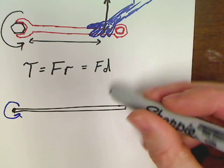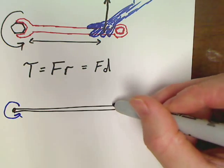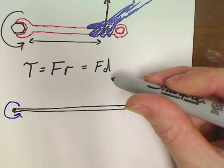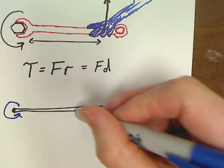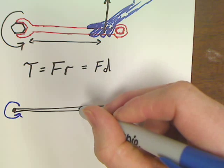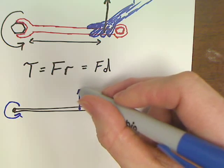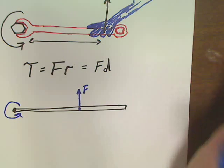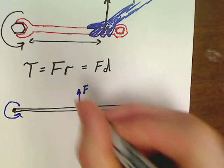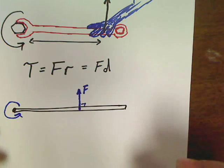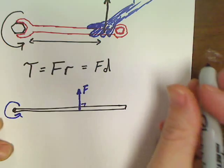Well, the most effective way to actually turn this would be to exert your force at a 90 degree angle. So what we would like to do is, if we put a point here, we would like to exert our force at a 90 degree angle, just like that. Now, that is our most effective method of rotating this.